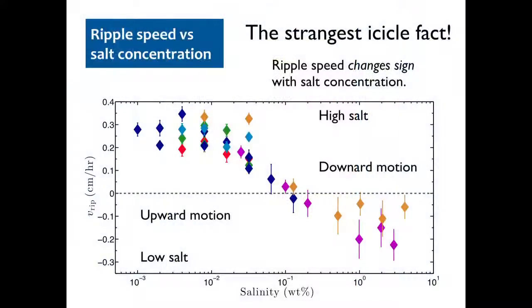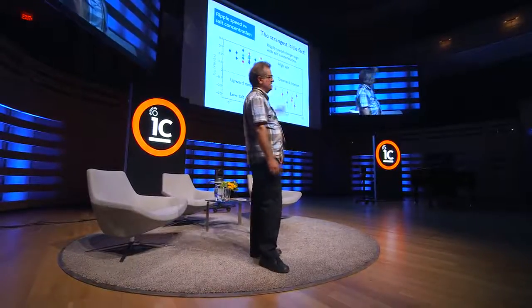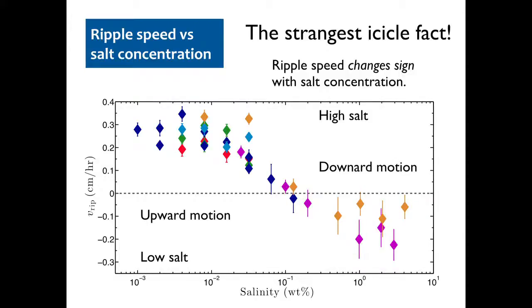Here's the data as a function of salt concentration. On the left we have upward motion — a positive velocity — at a very tiny concentration of salt. Then there's a magic Goldilocks concentration of about 0.1 weight percent. On the other side of that, the ripples move down. So the ripples sometimes go up and sometimes go down, depending on the quantity of salt in the water. That's a strange fact.